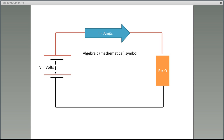To begin with, in our electrical circuit we use algebraic or mathematical symbols. For voltage we use the symbol V, measured in volts. Current uses the letter I, measured in amperes or amps. And R is for resistance, measured in ohms.